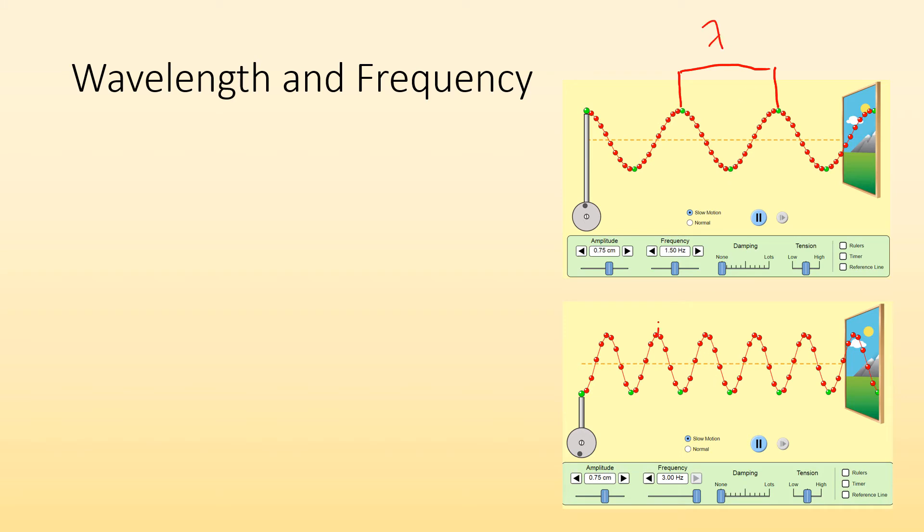Now the speed of light is constant, but the frequency, if I was an observer hanging out at the door and I was counting how many peaks went by me in a certain amount of time, that would be my frequency. And those two things are not going to be the same.